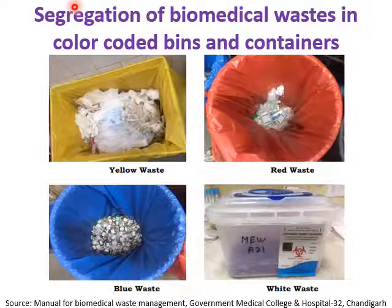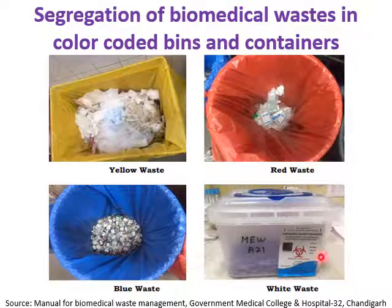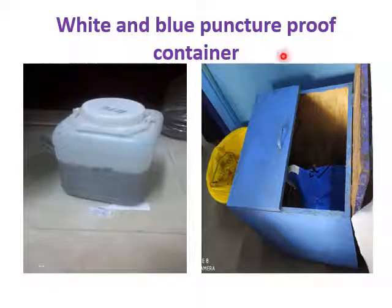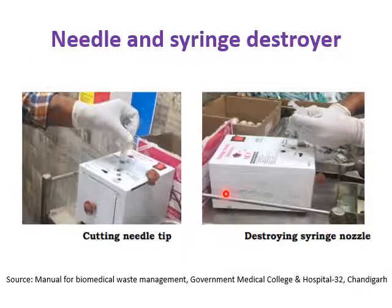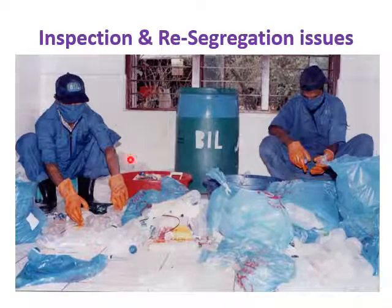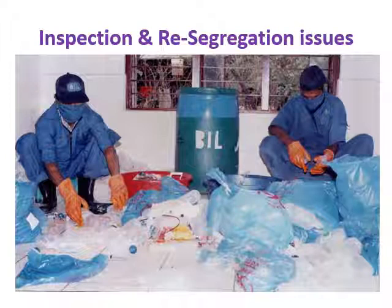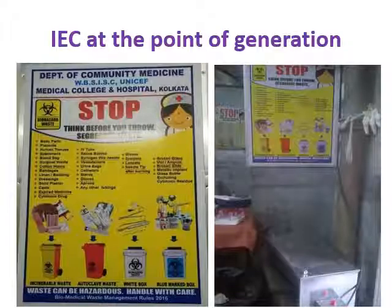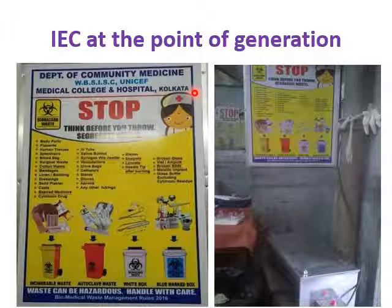This slide shows segregation of biomedical waste using color-coded bins — yellow, red, blue, and white — and puncture-proof, tamper-proof containers. A needle and syringe destroyer is shown; both electrical and manual destroyers are available. There should be no secondary re-segregation, as that increases infection risk. IEC — information, education, and communication — posters related to biomedical waste management should be displayed at the point of generation.